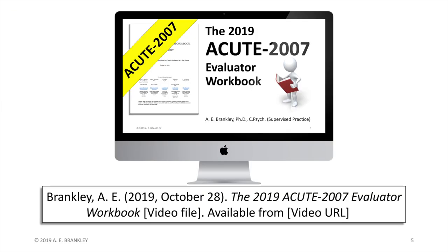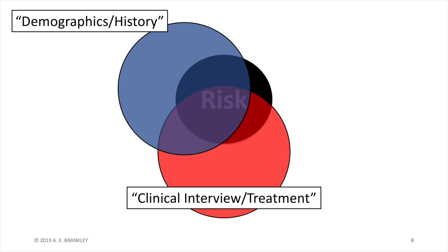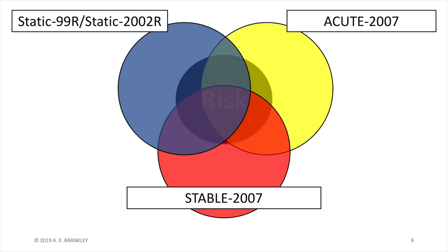For an overview of the workbook, please see the video referenced on your screen. The video you are currently watching focuses only on the combination rules. Before we think of combination rules, let's take a step back. We are trying to measure phenomena that help explain why individuals commit sexual offenses. Unlike characteristics like height or weight, we cannot directly see the phenomena we are trying to measure - we infer the presence of these underlying constructs by examining different types of information. These domains map onto the static, stable, and acute risk assessment tools.